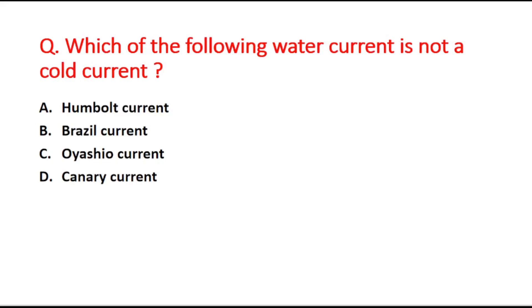Next question: Which of the following water currents is not a cold current? Option A is Humboldt current, B is Brazil current, C is Oyashio current, and D is Canary current. The right answer is option B, Brazil current — it is a warm current.